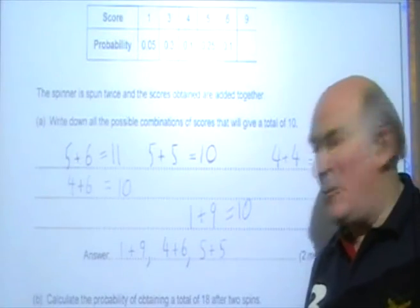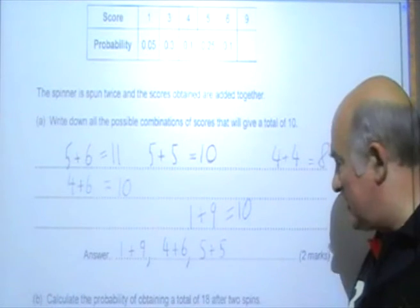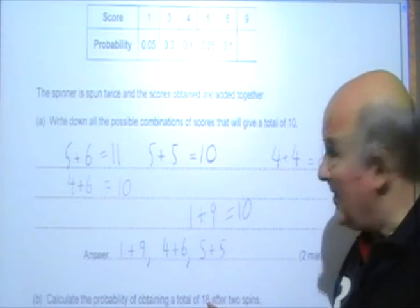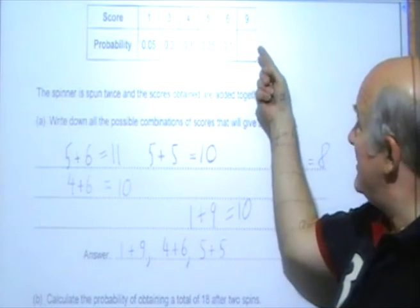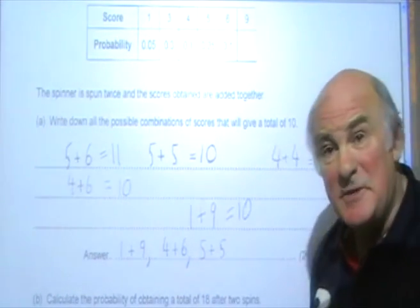Right, now for part B. Calculate the probability of obtaining a total of 18 after two spins. Well, a total of 18, fairly obviously, is going to come from 9 and 9 in two spins. But the probability for 9 is missing.